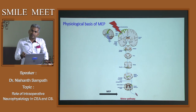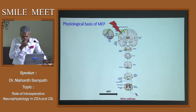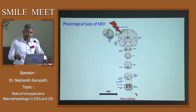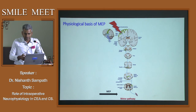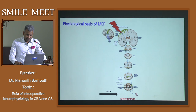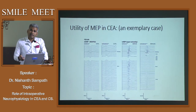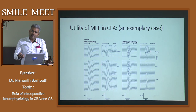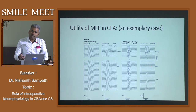SSEPs cannot address the issue of pure motor stroke because they assess only the sensory system. In MEPs, we stimulate the cortex across the scalp and record from muscles. The disadvantage is that every stimulation causes a twitch that can disturb the surgeon, and the anesthetist must avoid muscle relaxants and inhalational agents. In one example, SSEPs remained normal throughout the procedure, but MEPs picked up an ongoing motor stroke — amplitudes diminished while SSEPs remained intact.